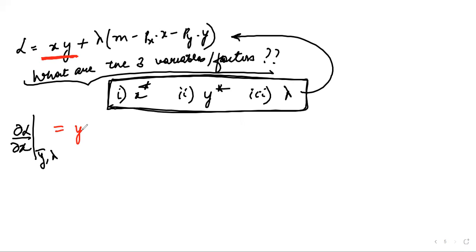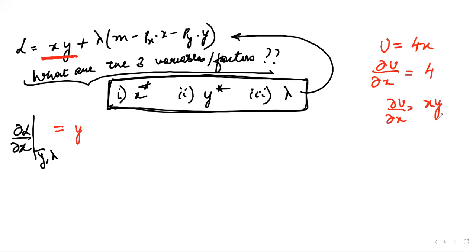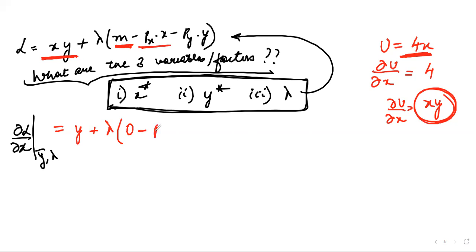Just as differentiating 4x with respect to x gives 4, differentiating xy with respect to x — treating y as a constant — gives y. So the first-order condition is: y plus lambda times (differentiation of m is 0, minus px, and the remaining terms are zero) equals 0. This gives us y = lambda·px. This is Equation 1.